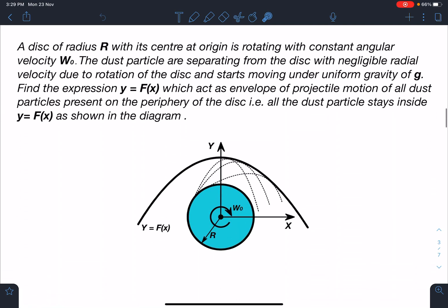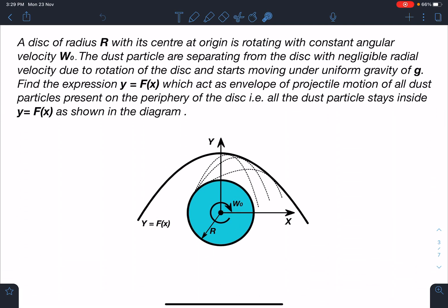Here is the statement of this problem: A disc of radius R with its center at origin is rotating with constant angular velocity ω₀. The dust particles are separating from the disc with negligible radial velocity due to rotation of the disc and starts moving under uniform gravity g.